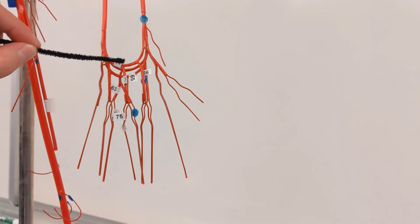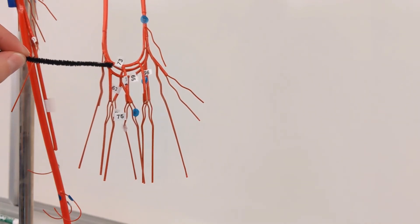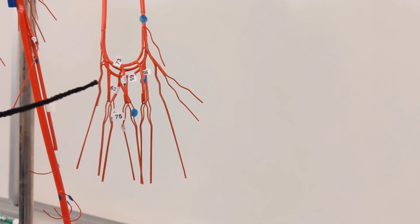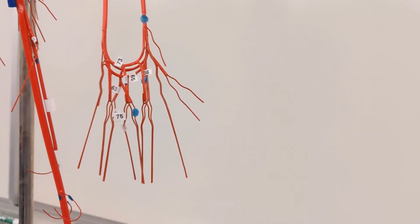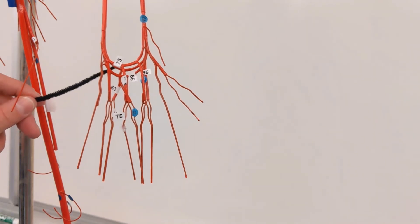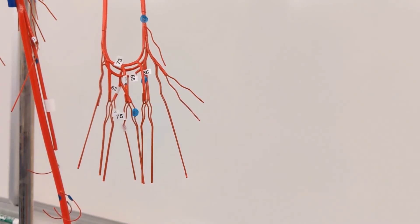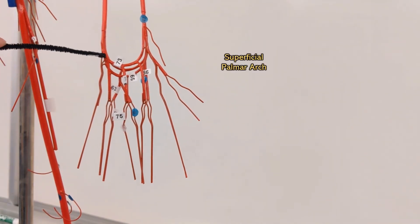So notice that there are three little arches. There's that one that has a 73 on it, there's this one that has a 65 on it, and then this one all the way in the back which doesn't have a number on it. This one with the 73 is the superficial palmar arch.